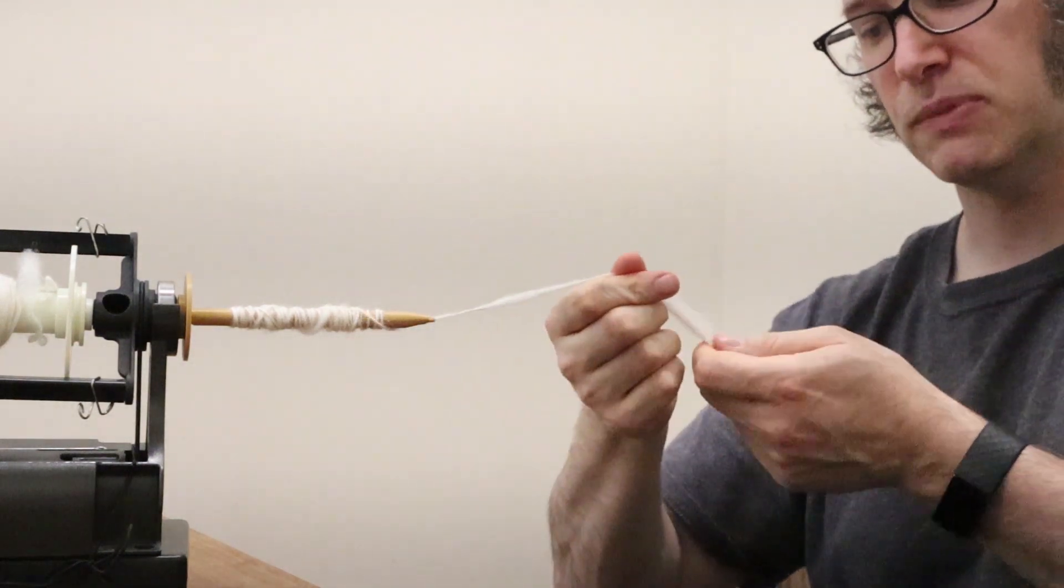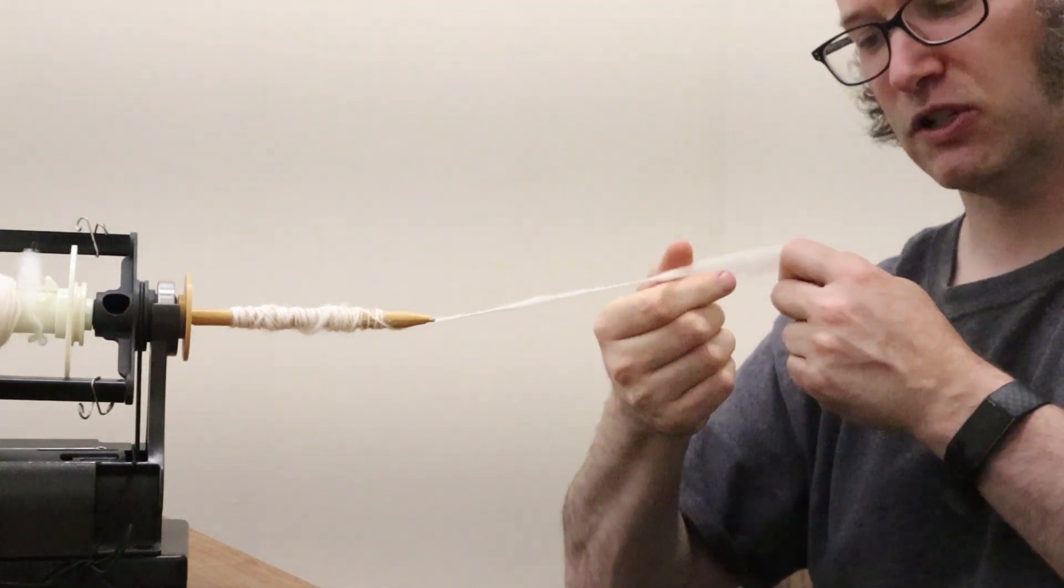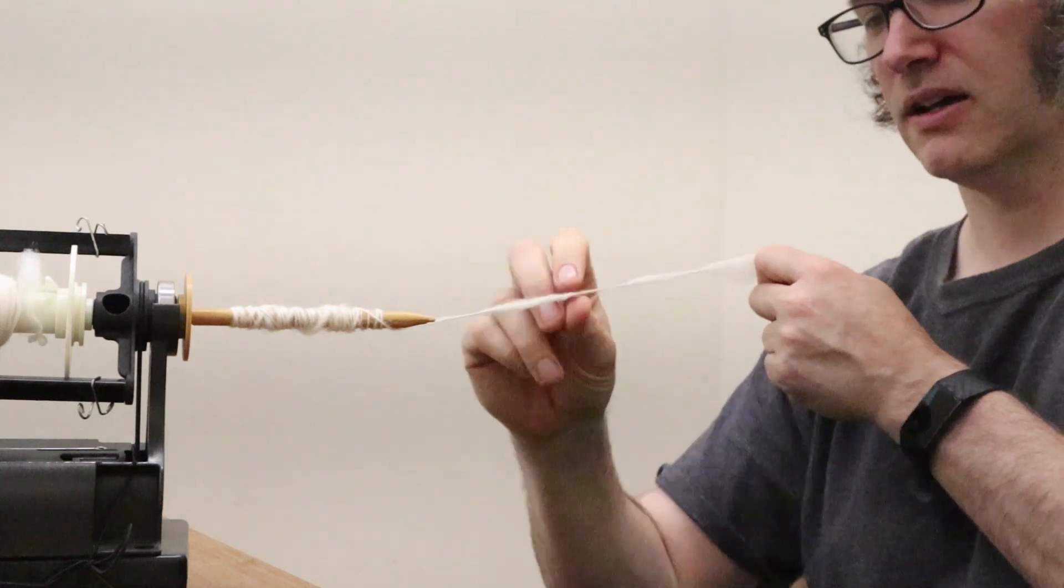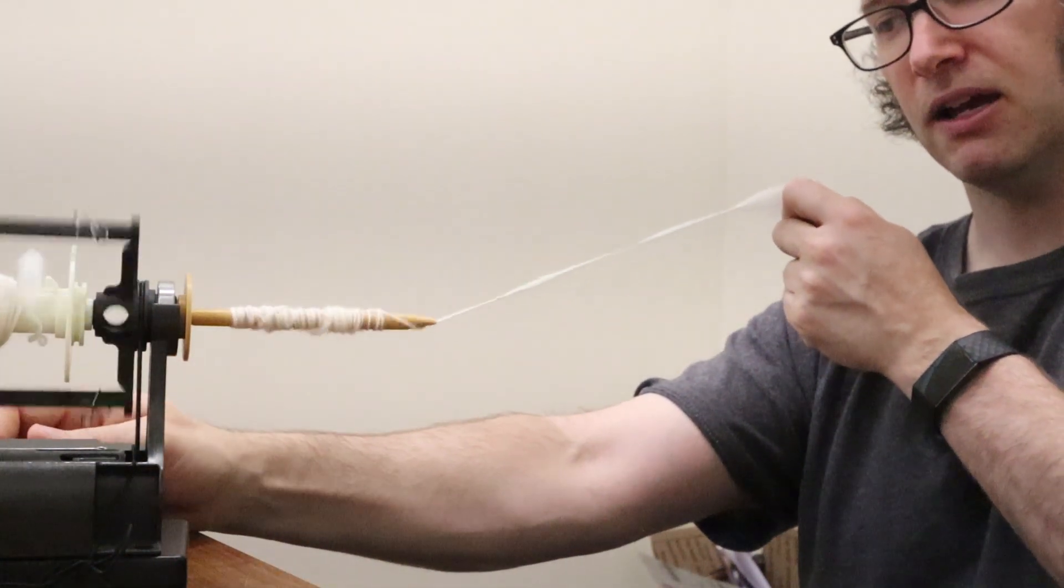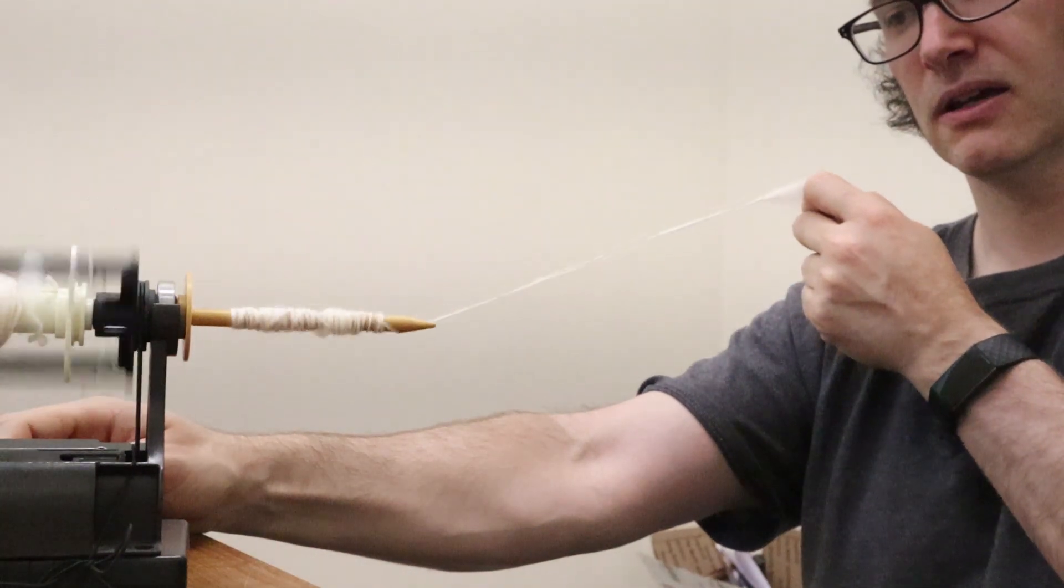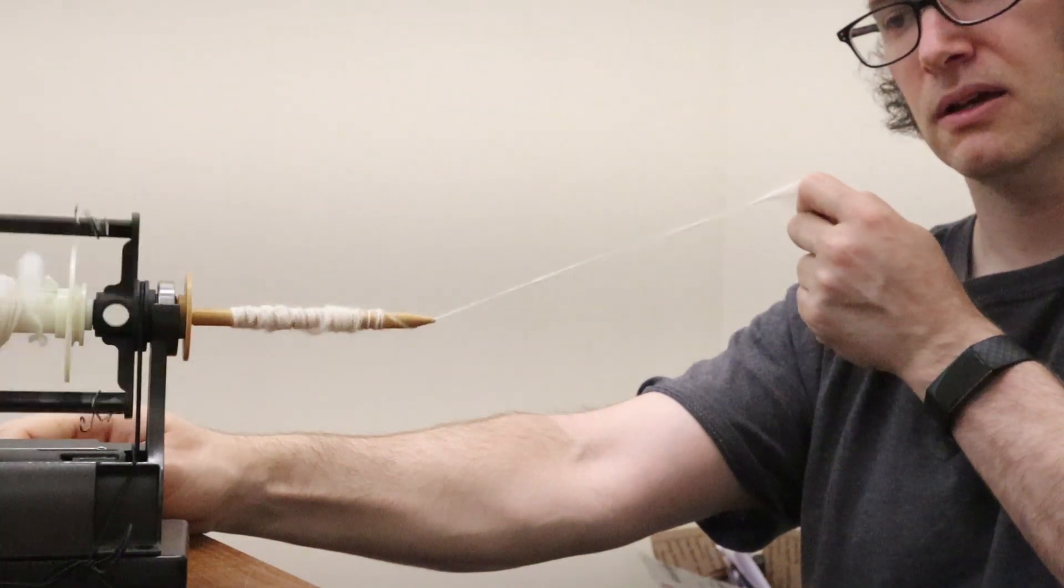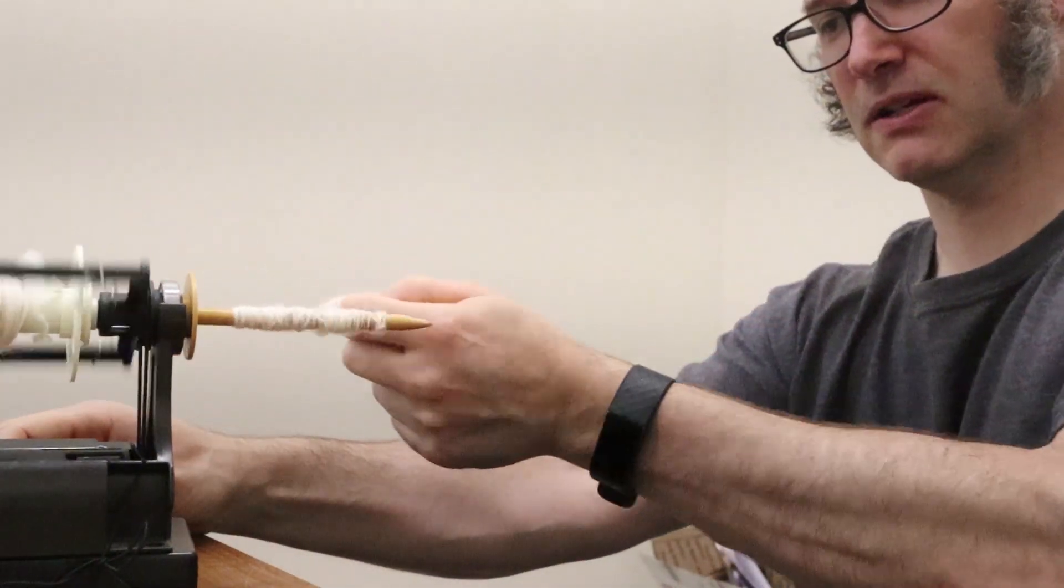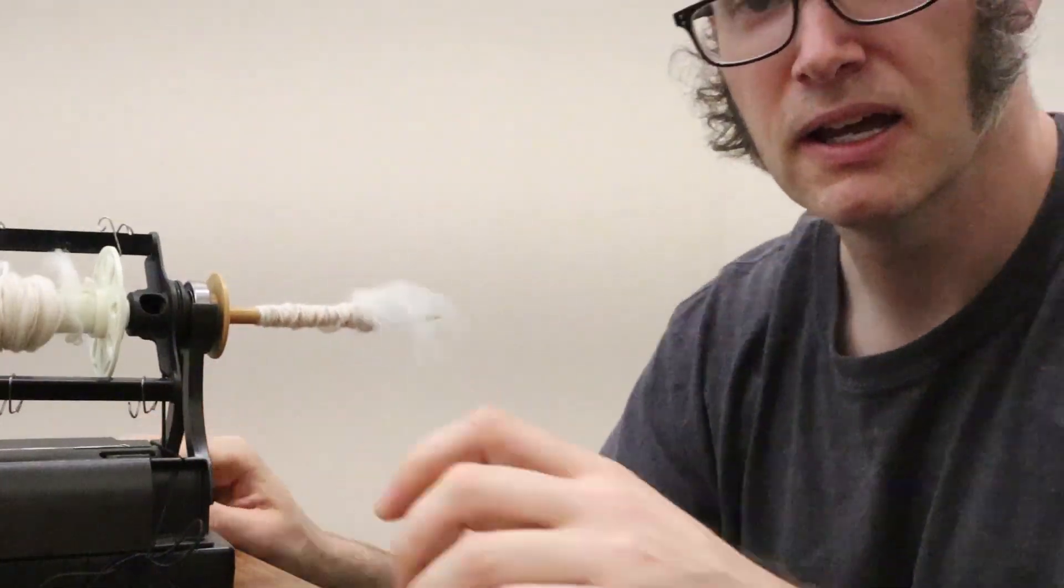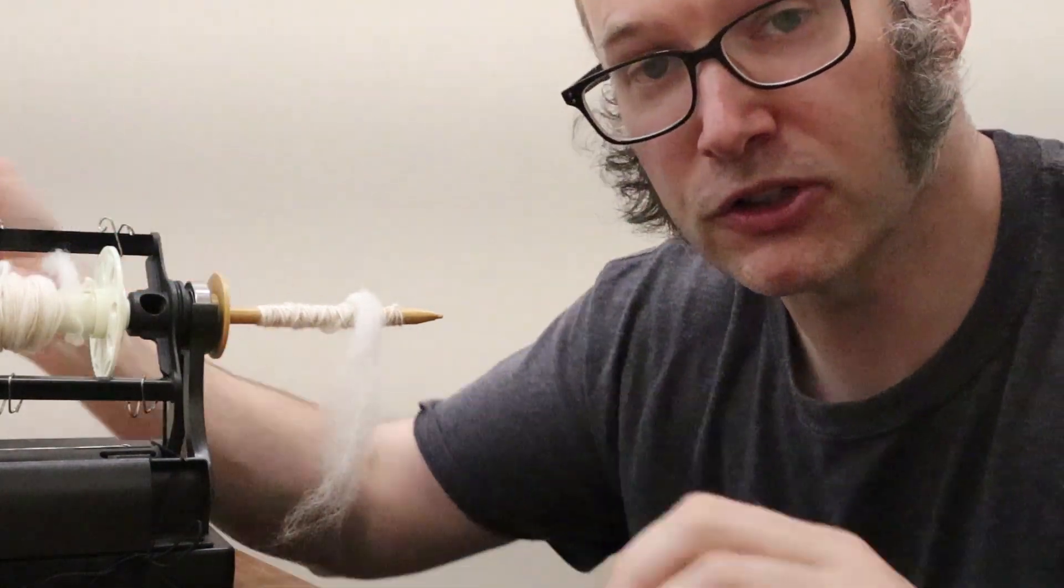And then you spin it on. And again, I'm just pre-drafting because I've just started doing this type of spinning and I don't have much experience. But again, you just kind of apply the twist, and then the second stage is to wrap it onto the spindle. And that's pretty much all there is to using the spindle.